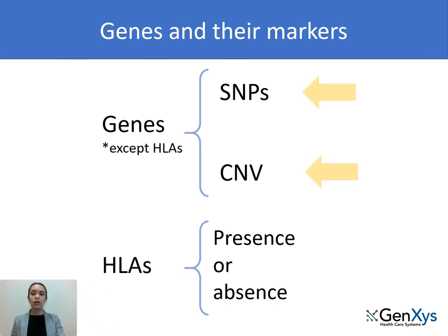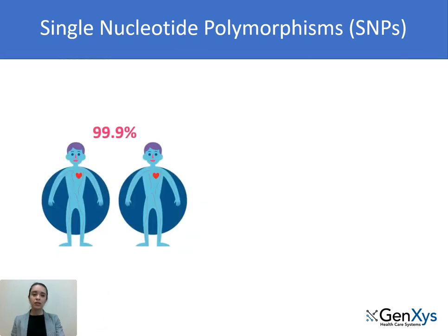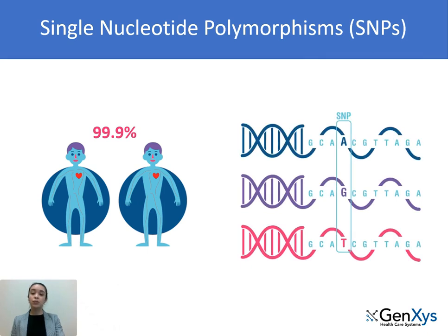For most genes, we evaluate single nucleotide polymorphisms, or SNPs, and their copy number variation, or CMV. For human leukocyte antigens, or HLAs, we evaluate the presence or absence of a specific variation. When we compare the DNA of two unrelated individuals, we see that they are 99.9% identical. Although the amount of genetic variability seems to be very small, these differences are what makes us unique. When these variations take place at a single base pair, we call them single nucleotide polymorphisms, or SNPs. The different genetic variations, or genotypes, of some of these SNPs will have an effect on how we respond to drugs.